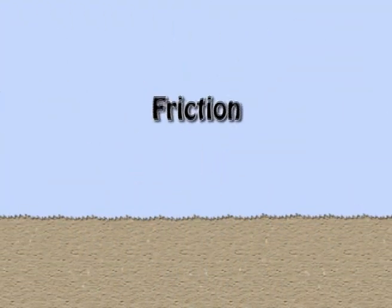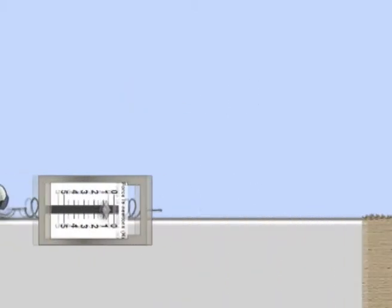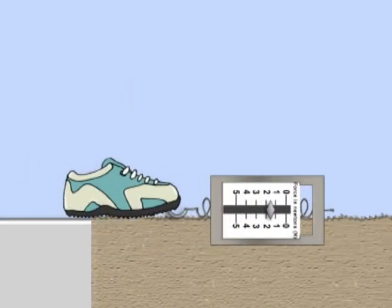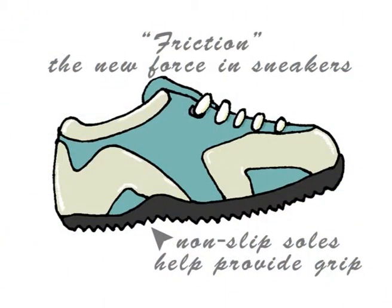The force of friction can slow an object down when it rubs up against another surface. You can measure this force by pulling an object attached to a force meter across smooth and rough surfaces. The force of friction is what creates grip that stops us slipping.